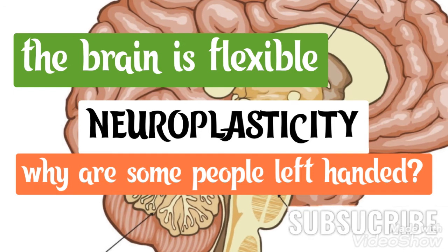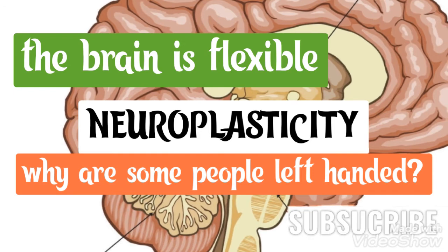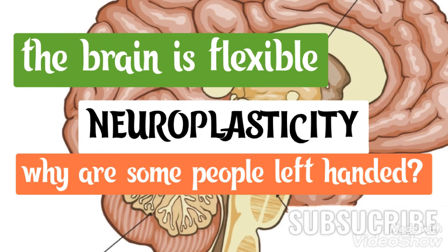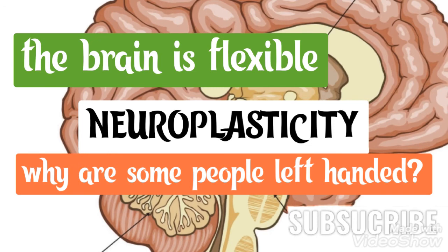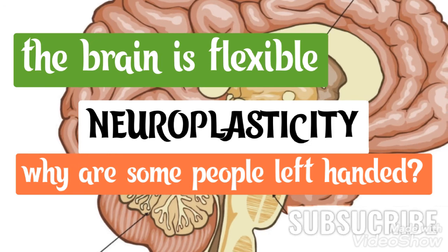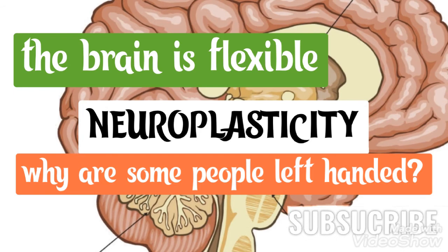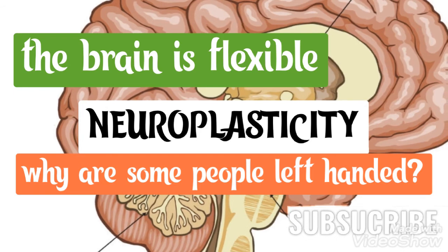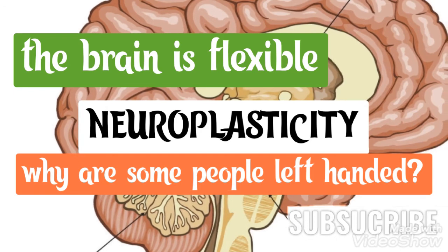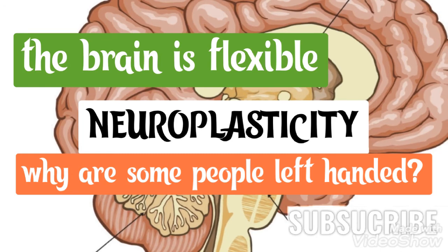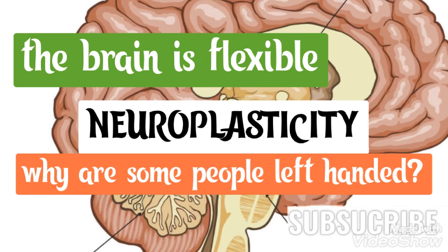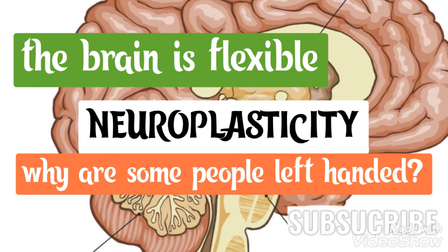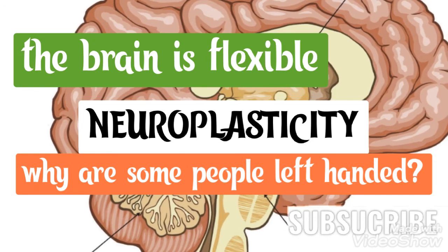At least some handedness is determined by genetics. Ultrasound scans show that nine out of ten fetuses suck the thumb of their right hand, suggesting that the difference is determined before birth. The mechanism of transmission has been traced to a gene on the X chromosome.